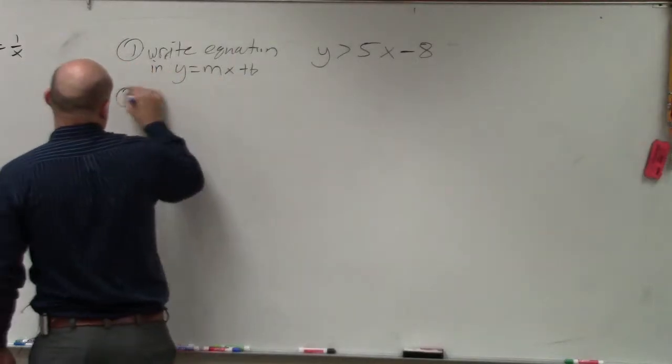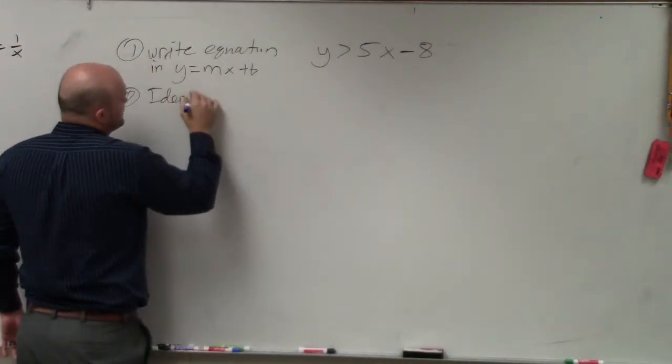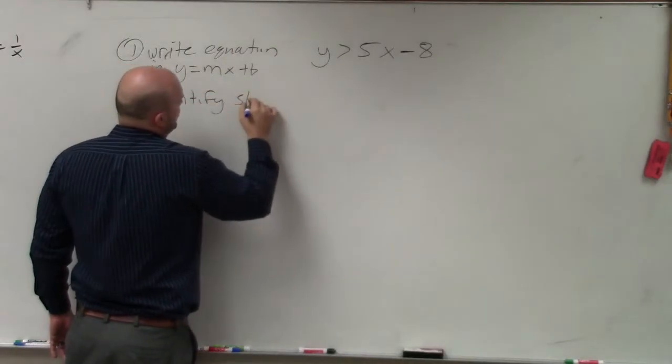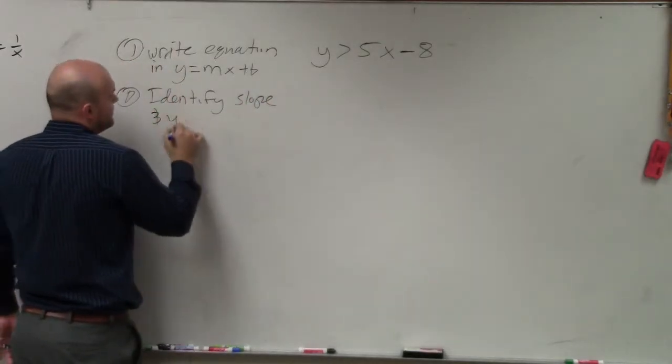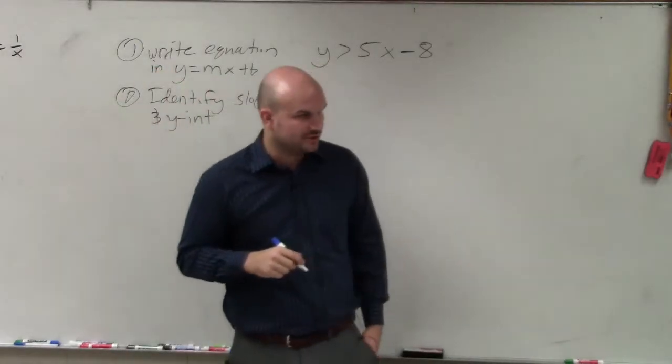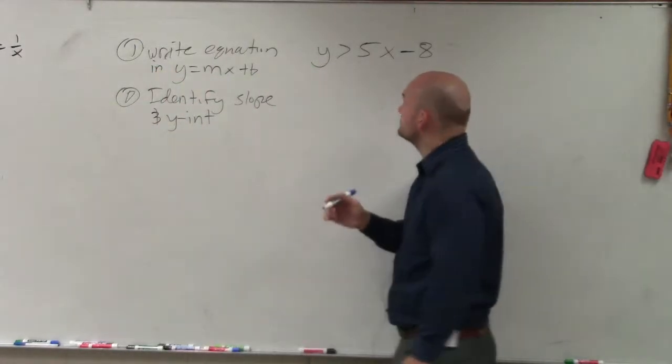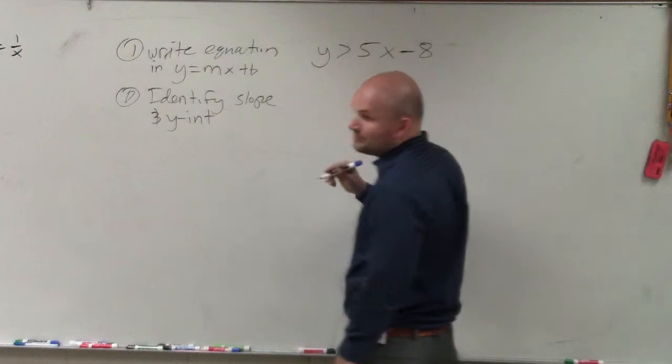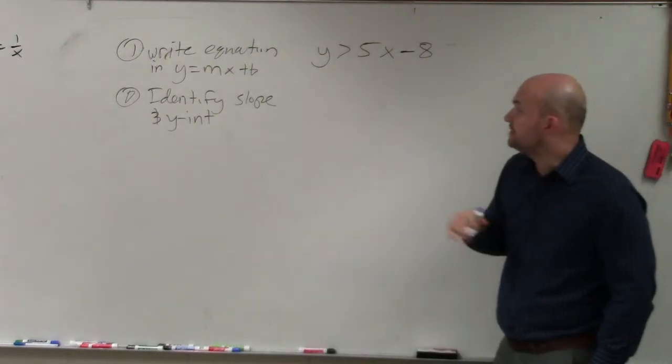Step number two, I always like to identify the slope and the y-intercept. If you're having trouble graphing, this is usually the first thing you want to make sure that you do. Identify the slope and the y-intercept. Remember, the slope is going to be your coefficient of x, which would be m, and y-intercept is b.